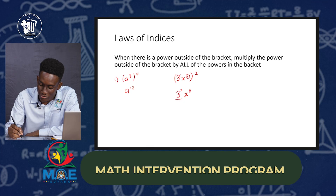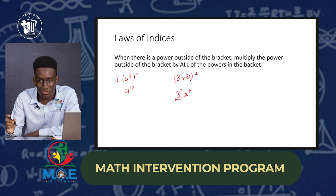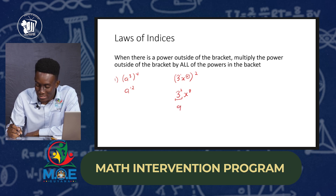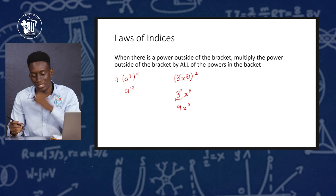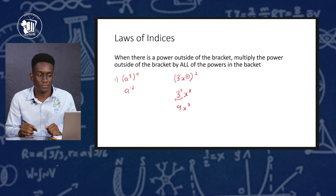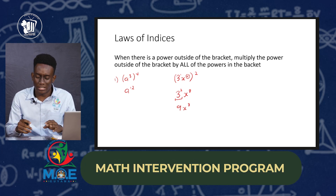So we get 3 raised to the second power times x raised to the eighth power. 3 to the second power is 3 times 3 which gives us 9. So the simplified answer is 9x to the eighth power.